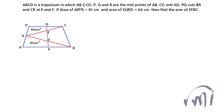Here we have a problem sent by Mr. Zaheen from India. In this problem, ABCD is a trapezium in which AB is parallel to CD. P, Q, and R are midpoints of AB, CD, and DA. The line PQ cuts PR and CR at E and F. The area of ABFR is 81 cm² and the area of EQDR is 64 cm². We have to find the area of EFBC.